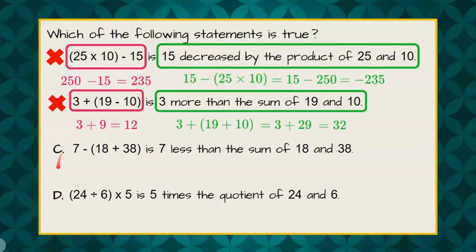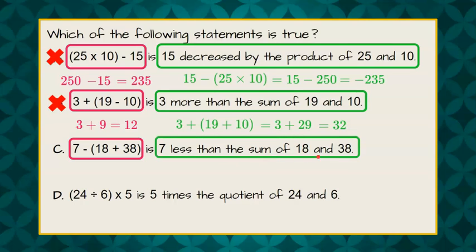Let's check C. 7 subtract the quantity or the sum, 18 plus 38, is our numerical expression. And that is 7 less than the sum of 18 and 38. So we're going to do our parentheses first. 18 plus 38 is 56. 7 subtract 56 is actually negative 49.